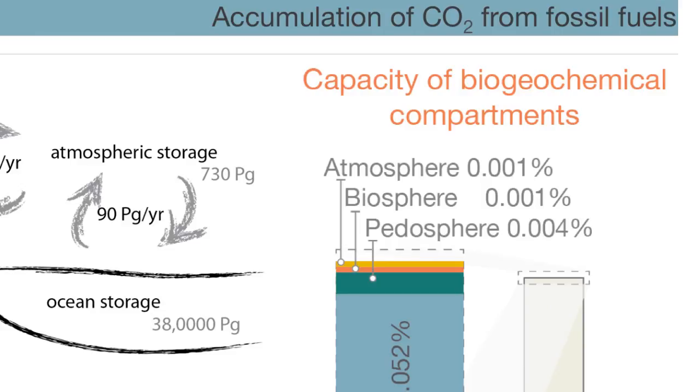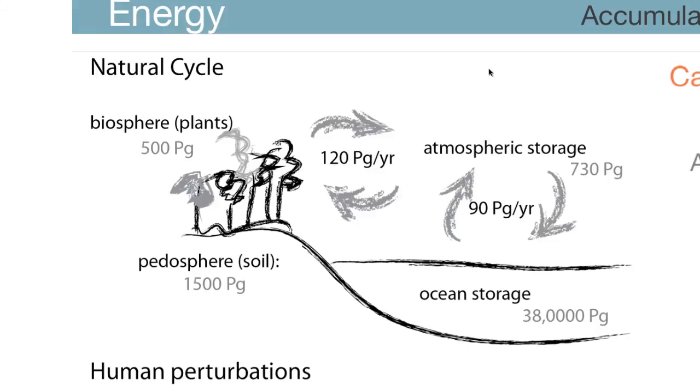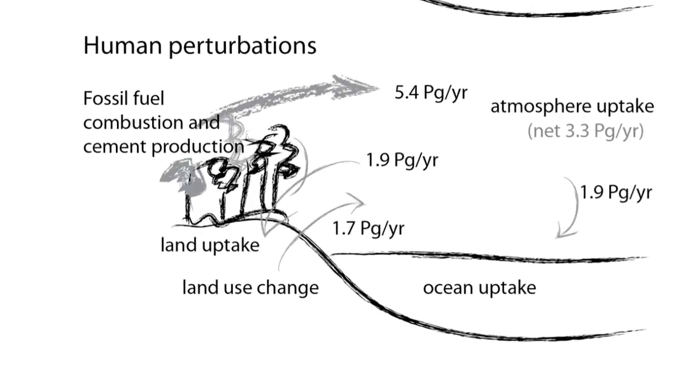So what does the picture look like annually? Well, there's an exchange between the biosphere, pedosphere, and atmosphere that is an equilibrium exchange. There's an equilibrium exchange between the atmosphere and the ocean.